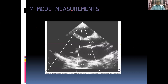This is a parasternal long axis view. You can see the right ventricle, the aortic valve, the left atrium, and the left ventricle. If you put the M-mode cursor across the tips of the open aortic valve, you get a tracing of the LV and aorta.